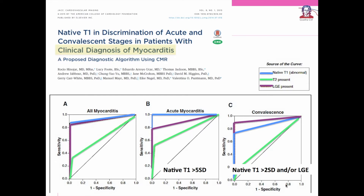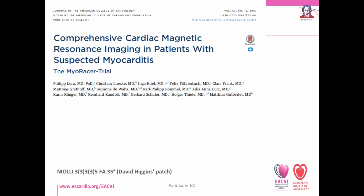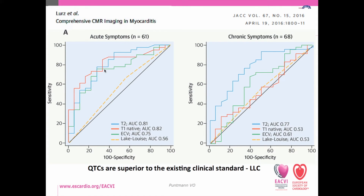Patients in convalescence had much more diverse imaging readouts. Native T1 might be normal or abnormal, indicating persistent inflammation, and they might or might not have residual late gadolinium enhancement. In a further study, the authors investigated concordance between histological evidence of myocardial inflammation and quantitative tissue characterization techniques, showing that native T1 and native T2 fared fairly well in patients with acute symptoms, whereas in those with chronic symptoms, only native T2 was able to discern the presence of myocardial inflammation. In either group, Lake Lewis criteria were not found helpful.